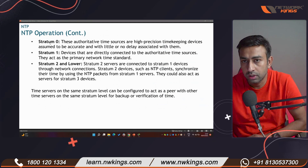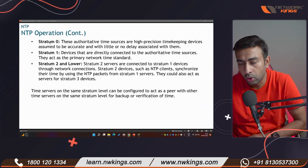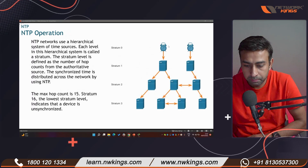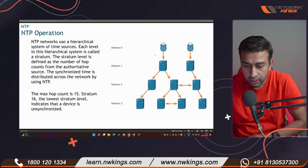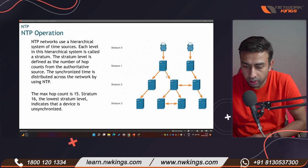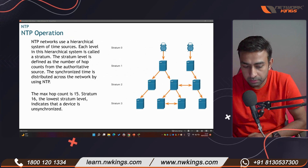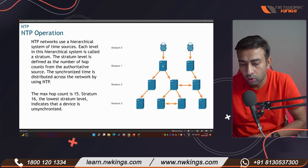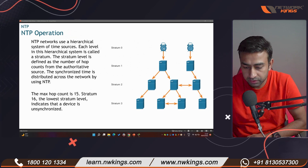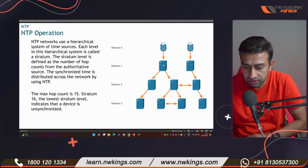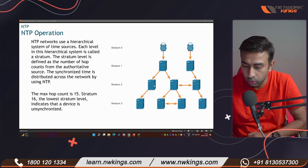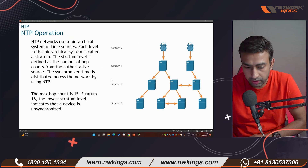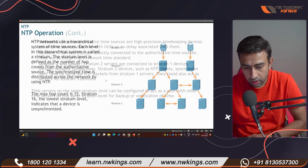Stratum zero is the best clock, giving time to stratum one, then stratum two, and stratum three. The maximum stratum level is 15 — stratum also means levels or hops. Stratum zero updates stratum one servers, which update stratum two devices, and so on.